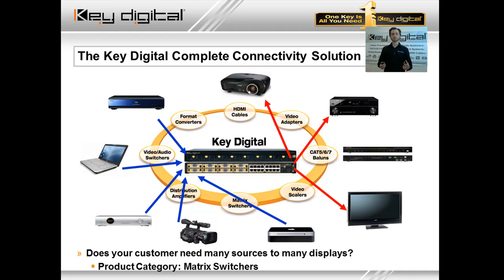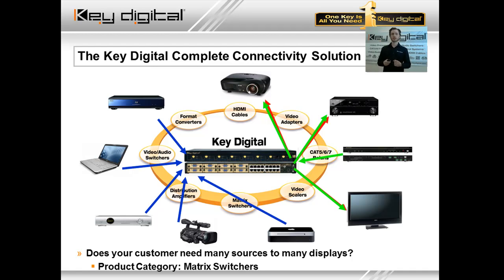Not only can we route video and audio from any source to any display, but with KeyDigital matrix switchers your control processor can be extended greatly. Instead of running additional wires to output zones, via some KeyDigital matrix products you're able to send a single wire or two wires from your control processor to our matrix switcher, and route those control signals to output zones as well. KeyDigital products are about more than just routing video and audio as a traditional matrix does — they take it to the next level with a complete connectivity solution: video, audio, and control.